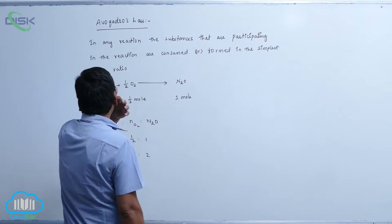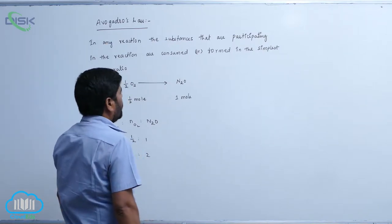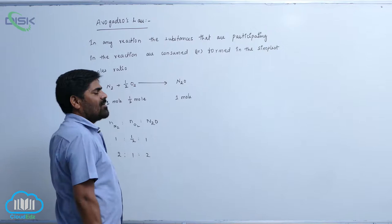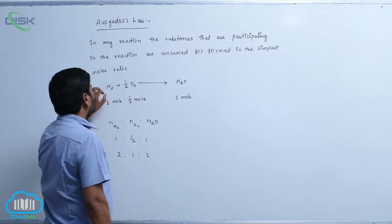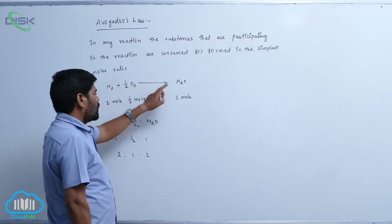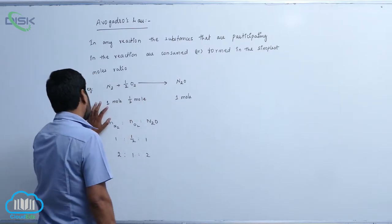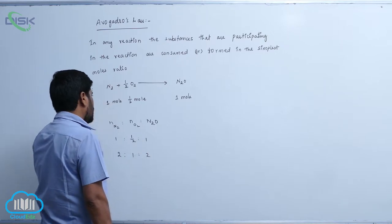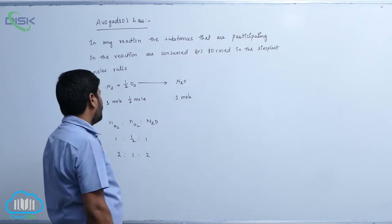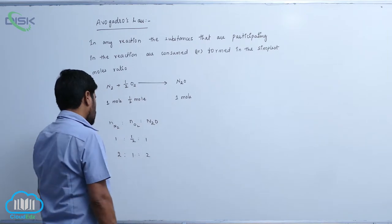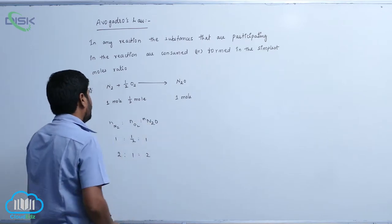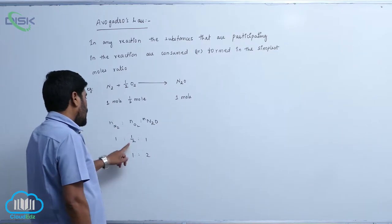The next law is Avogadro's law. For example, the formation of nitrous oxide: N2 reacts with half a mole of O2 to form nitrous oxide. In this, one mole of N2 is involved and half a mole of O2 is involved to form one mole of product. So the number of moles of N2, O2, and N2O are one mole, half mole, and one mole respectively.